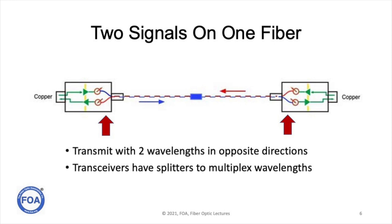Passive optical networks only need one fiber to transmit in both directions, because the transceivers have wavelength division multiplexers in the outputs and inputs. It transmits at one wavelength in one direction and a second wavelength in the opposite direction. The traditional GPON wavelengths are 1490 nanometers downstream and 1310 nanometers upstream, and because they're at different wavelengths, they don't interrupt each other.